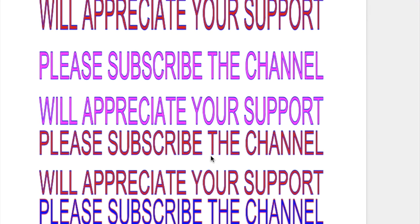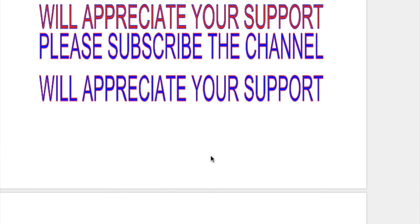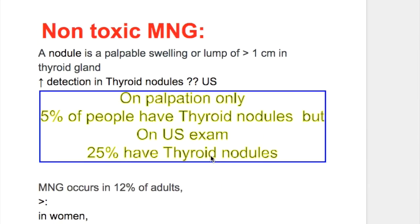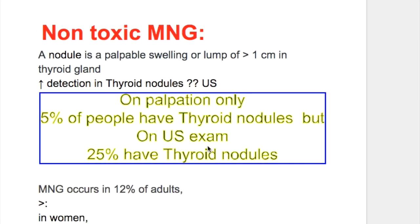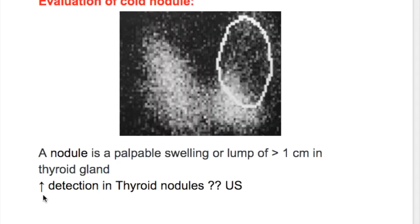In this video we'll discuss non-toxic multi-nodular goiter. A nodule is a palpable swelling or a lump of more than 1 cm in the thyroid gland.